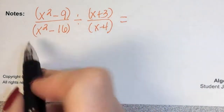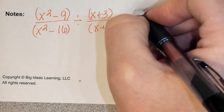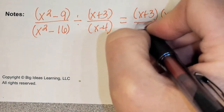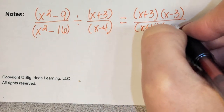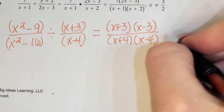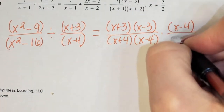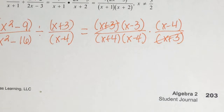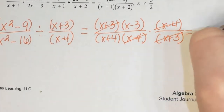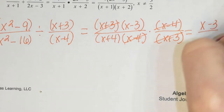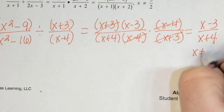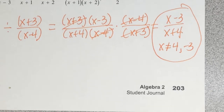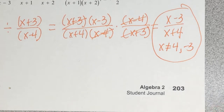Tori, talk me through this. The numerator factors as x plus 3 times x minus 3, over x plus 4 times x minus 4. Then we flip the second fraction and multiply. x plus 3 and x minus 4 cancel, leaving x minus 3 over x plus 4. x cannot equal 4 or negative 3.